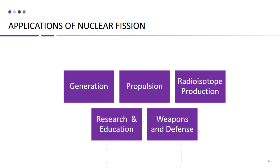Nuclear fission is also used in the production of radioisotopes, which are radioactive isotopes of elements that have various applications in medicine, industry, and research. Radioisotopes are used in cancer treatment, radiography, sterilization of medical equipment, food irradiation, and industrial process control, among others.